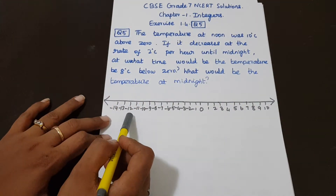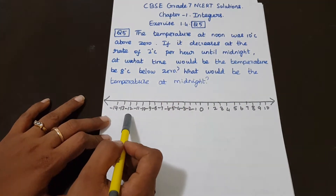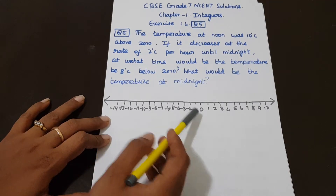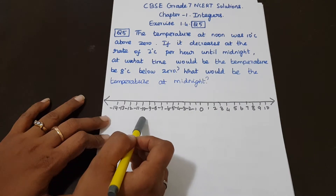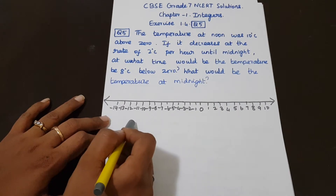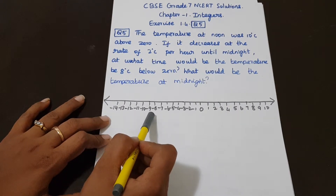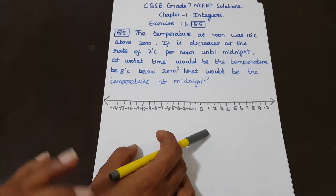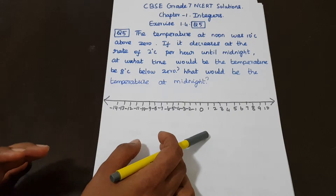Now below 0 is minus 8 degree. The left side of the number line is below 0. So below 0 means minus 8 degree Celsius — that is the target temperature, and midnight is the time we need to find.